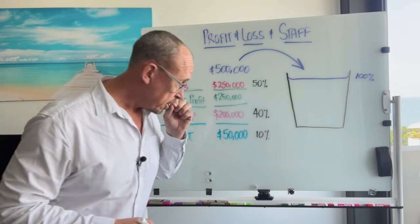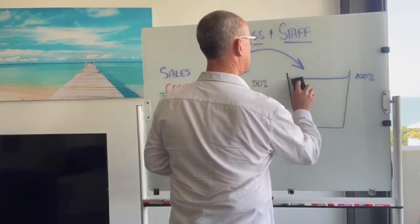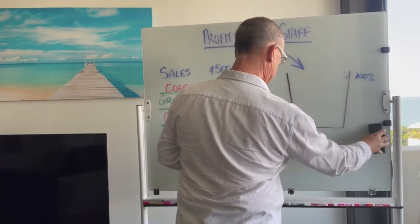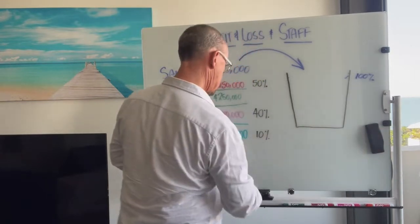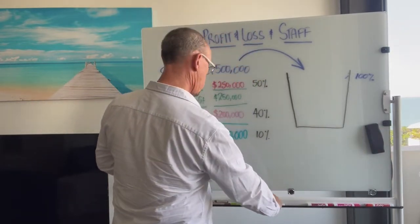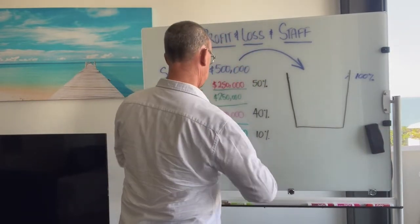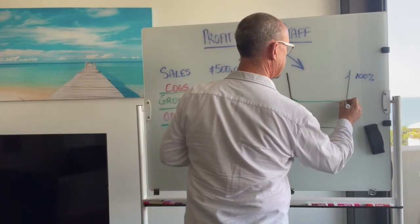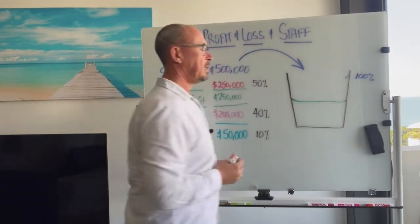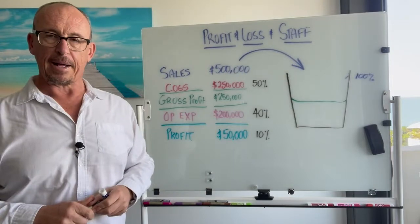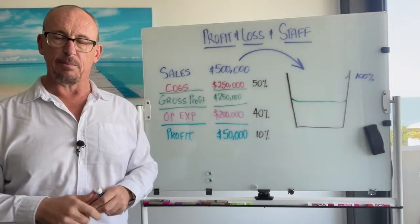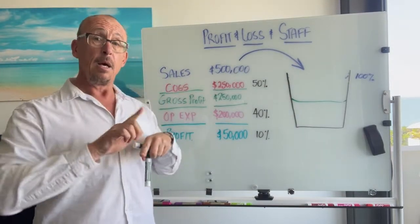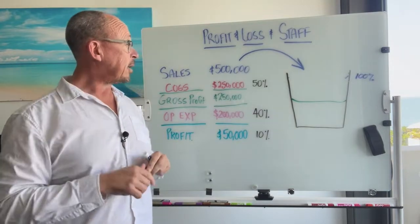So they're going to get a straw and they're going to start to drink it down to about halfway through the glass, right down to half — which is where our gross profit mark is. That's our first part that we can explain to the employees, because what they see is the money going out. They saw the money coming in but not the money going out.